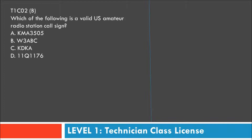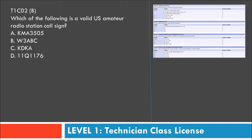Question C2: Which of the following is a valid U.S. amateur radio station call sign? Possible answers are KMA3505, W3ABC, KDKA, or 11Q1176. For this, I go to the FCC website and find their call sign chart. I'll pull up a section of that chart so we can refer to it.